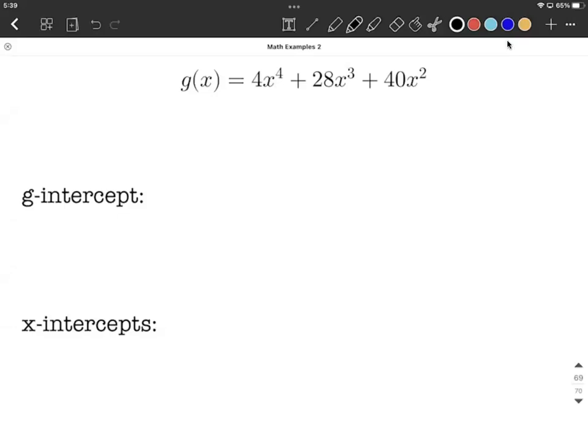Okay, with this fourth degree polynomial, our goal here is to find the intercepts: the x-intercepts and what this problem is referring to as the g-intercept. The g-intercept you can think of as being the same thing as the y-intercept.